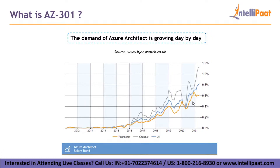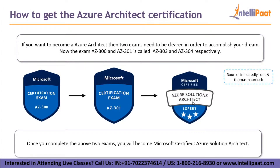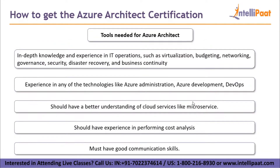The next topic is how to get Azure architect certification. This exam is divided into two parts: AZ-300 and AZ-301. In order to accomplish your dream of being an Azure architect, you need to clear both exams. These exams are now called AZ-303 and AZ-304 respectively. There are a few prerequisites one should know if planning to become an Azure architect.